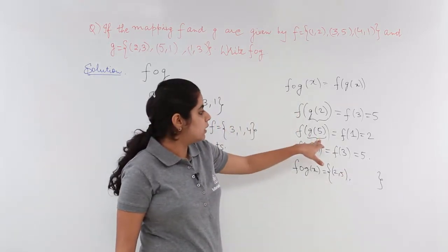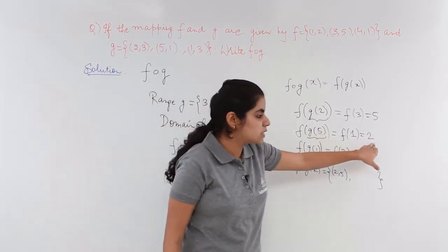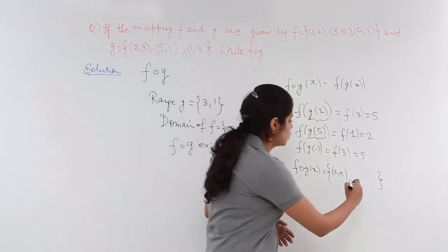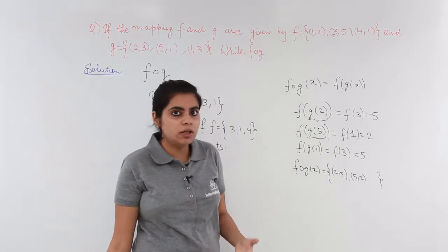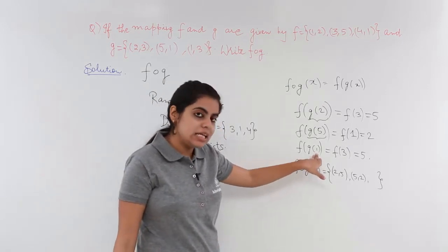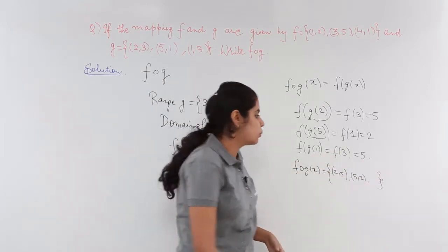The second ordered pair is what? Inside we have 5, outside we have 2. So it is 5, 2. And what about the third ordered pair? The third ordered pair is inside 1 outside 5. So 1, 5.